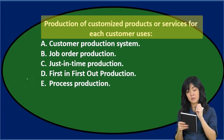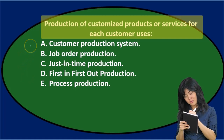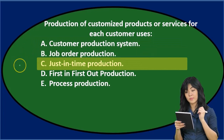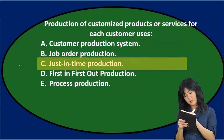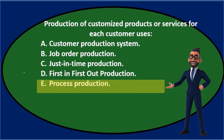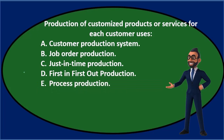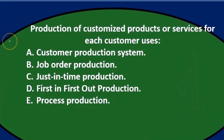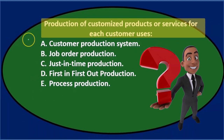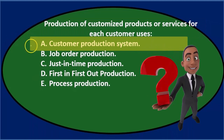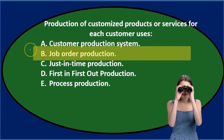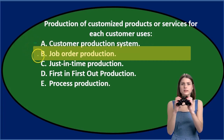Next question: production of customized products or services for each customer uses either A) a customer production system, B) job order production, C) just-in-time production, D) first-in-first-out production, or E) process production. Let's go through this using the process of elimination. Option A — customer production system — sounds kind of reasonable, so I'll keep it for now. Option B — job order production — that's the kind of system we're working on, so I'll keep that one too.